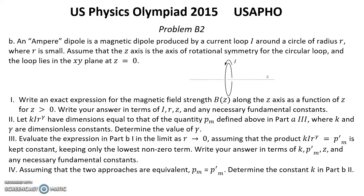Part B, Question 1: Write an exact expression for the magnetic field strength BZ along the Z axis as a function of Z for Z greater than zero, in terms of I, R, Z, and any necessary fundamental constants. Question 2: Let K·I·R^γ have the same dimensions as PM defined in Part A3, where K and γ are dimensionless constants. Determine the value of γ.